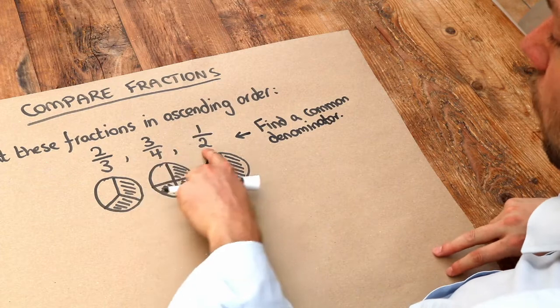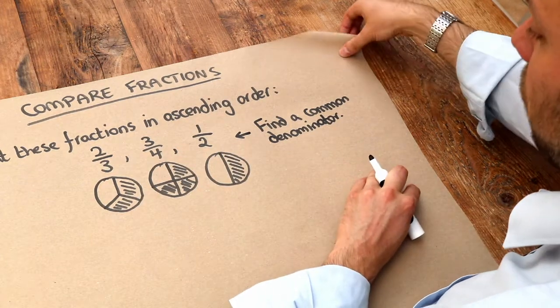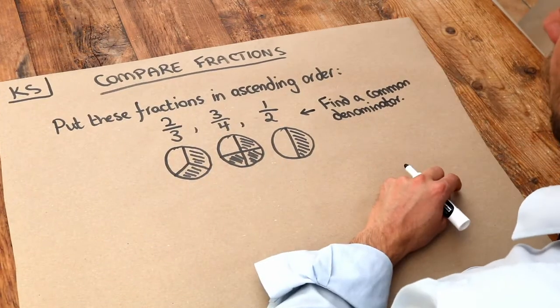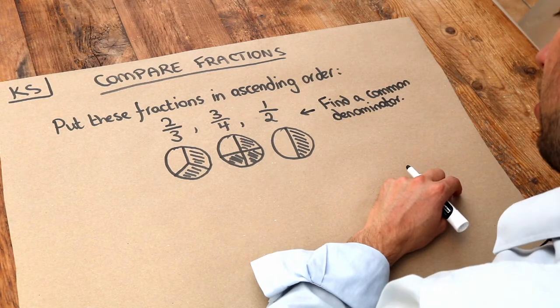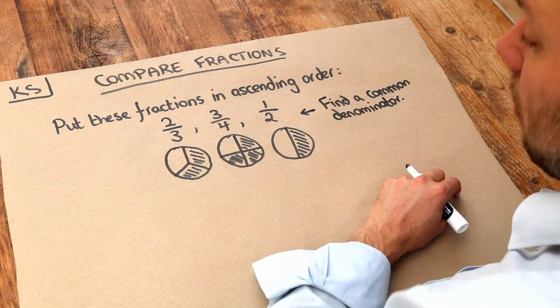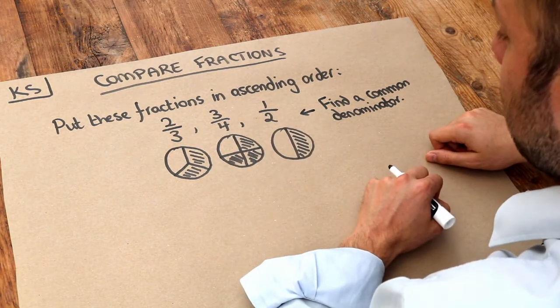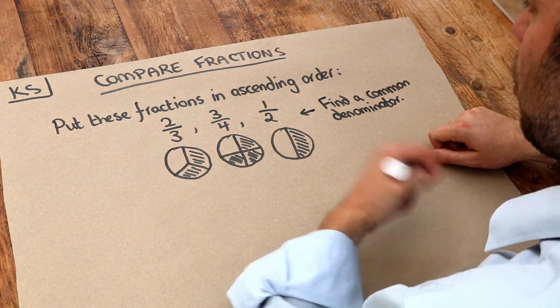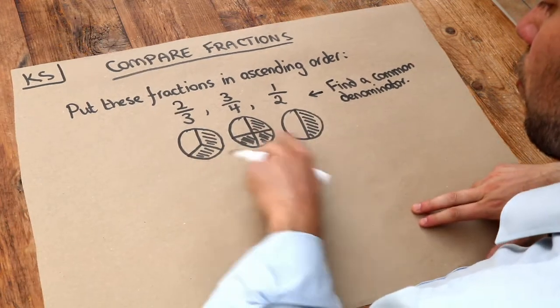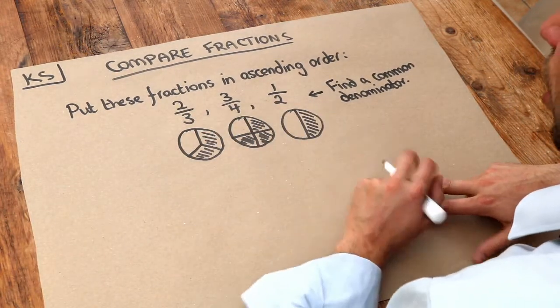What do three, four, and two all go into? What's a multiple of three, a multiple of four, and a multiple of two? Well, twelve is a multiple of three, twelve is a multiple of four, and twelve is a multiple of two. In another video we see this is called the lowest common multiple. So you want all of these fractions to be over twelve.